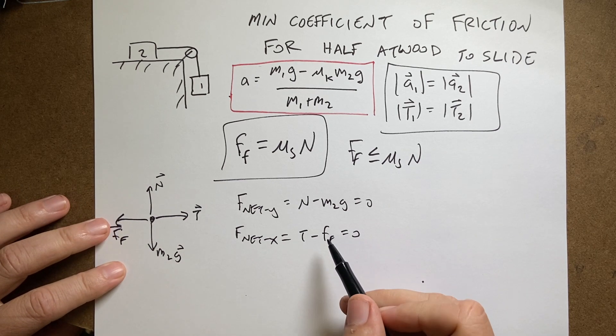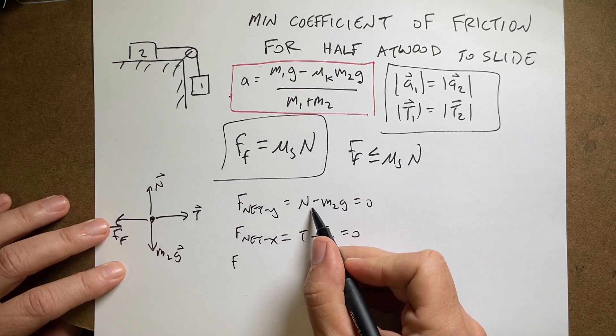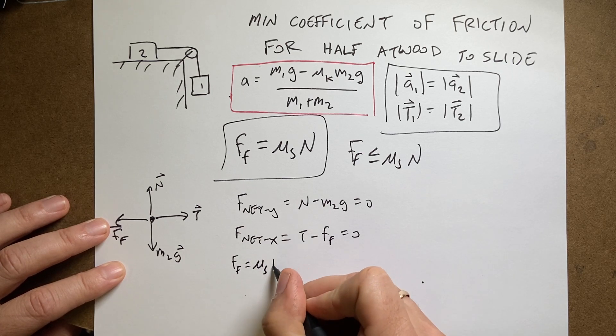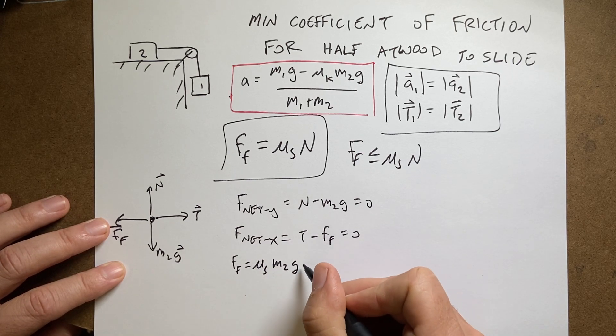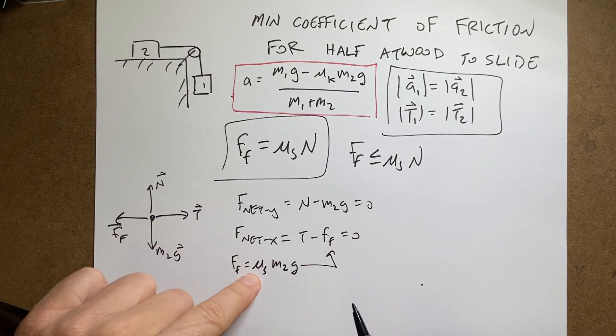Now I can solve for N. It's just going to be m2g. So the frictional force is going to be the coefficient of static friction times m2g. That goes in right there. But what about the tension?